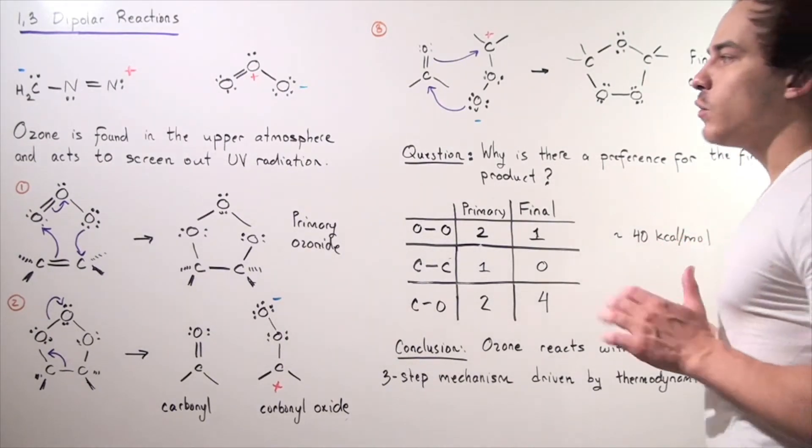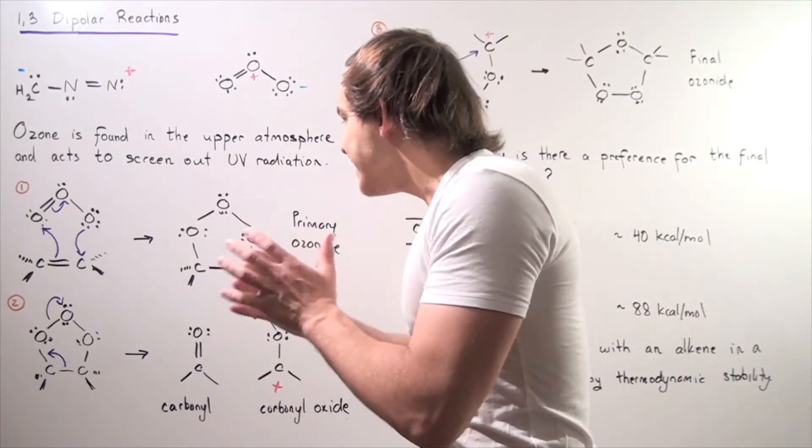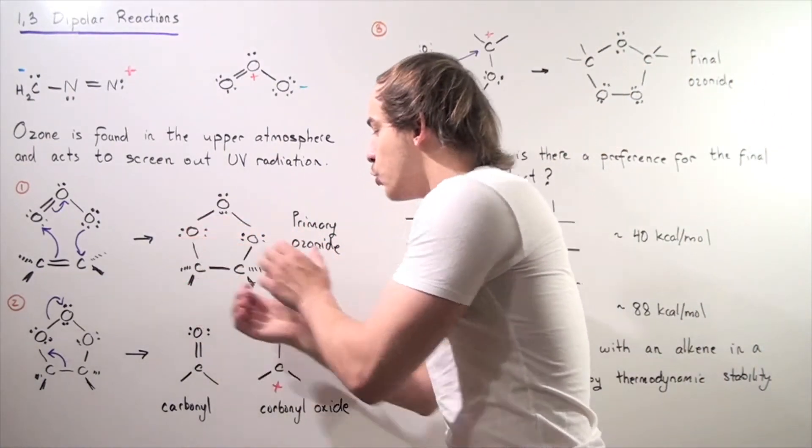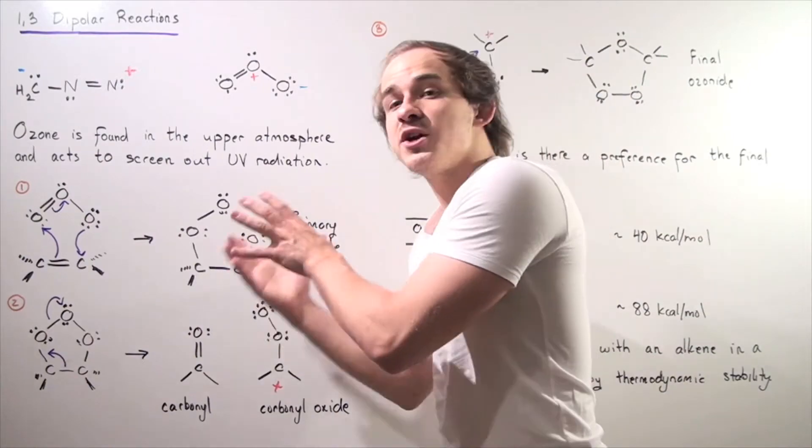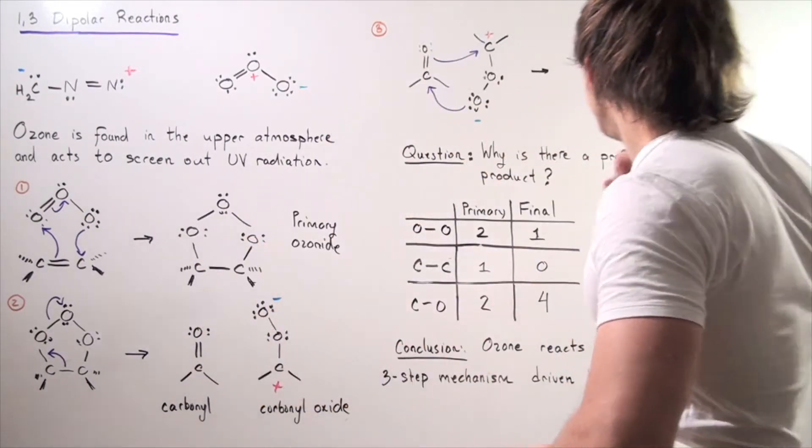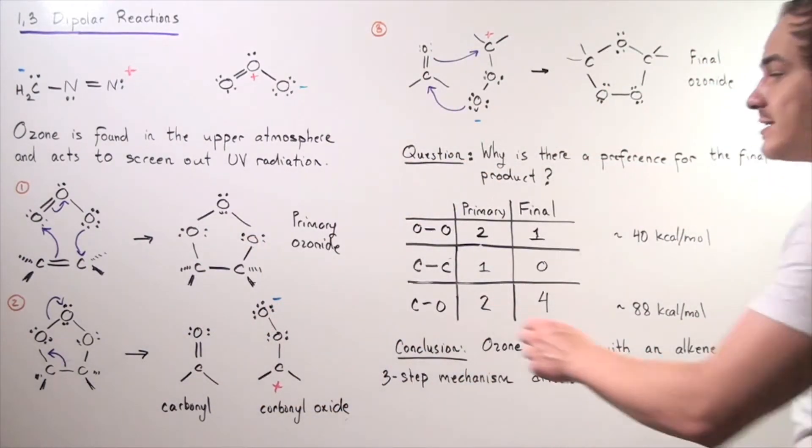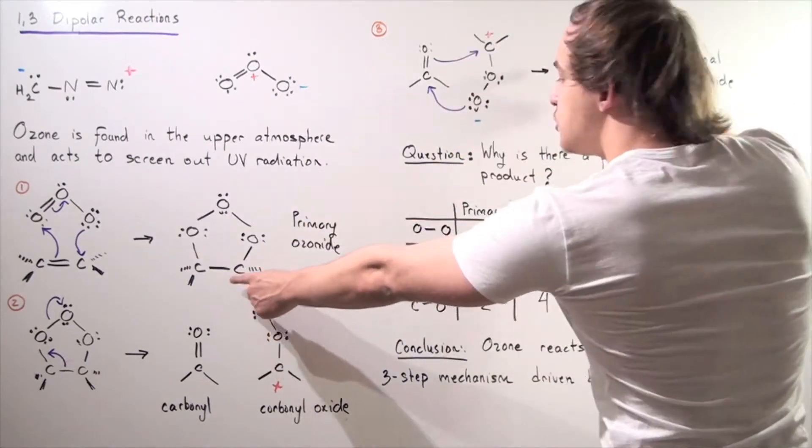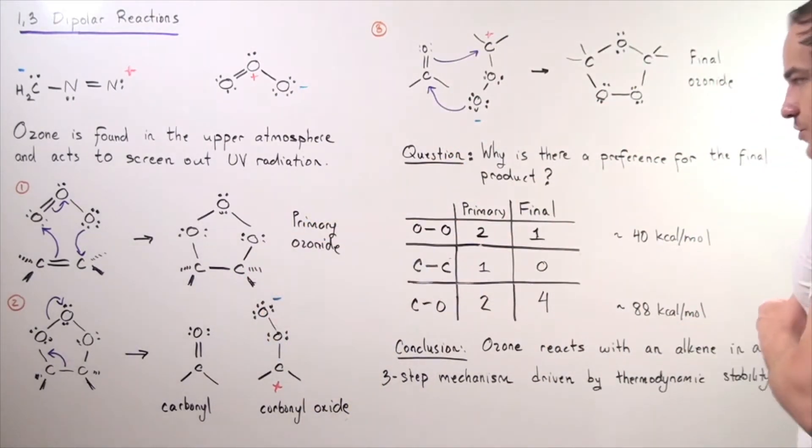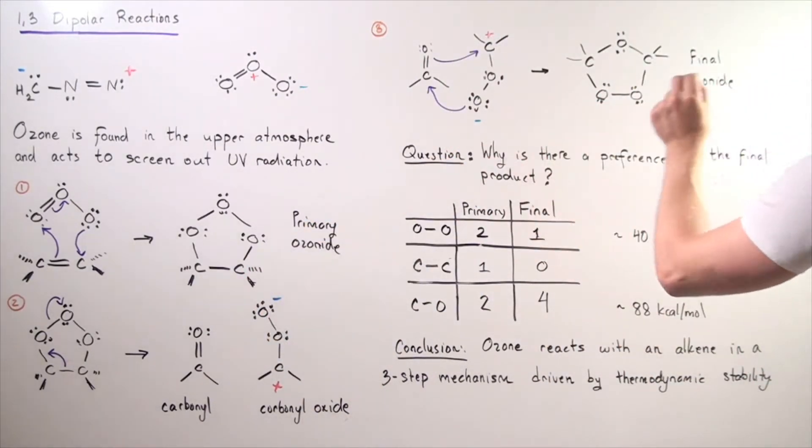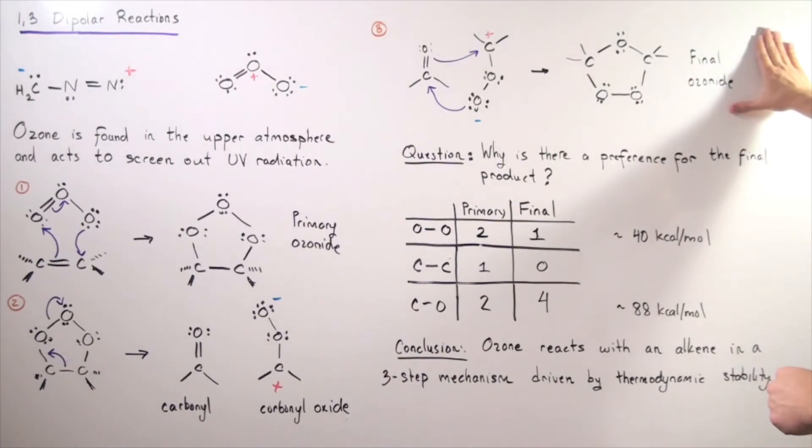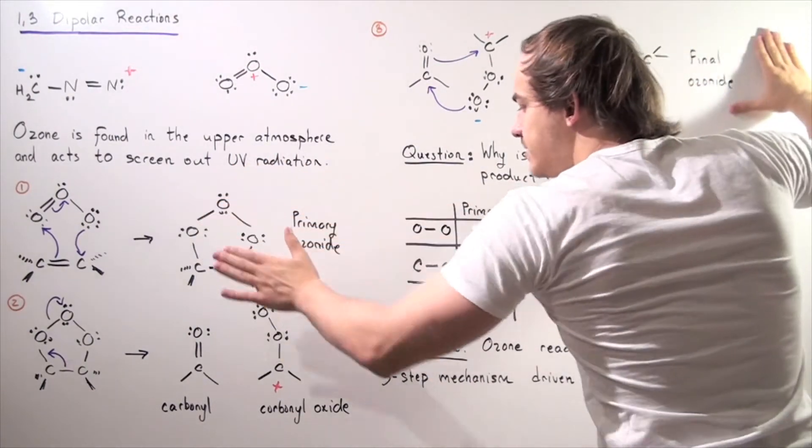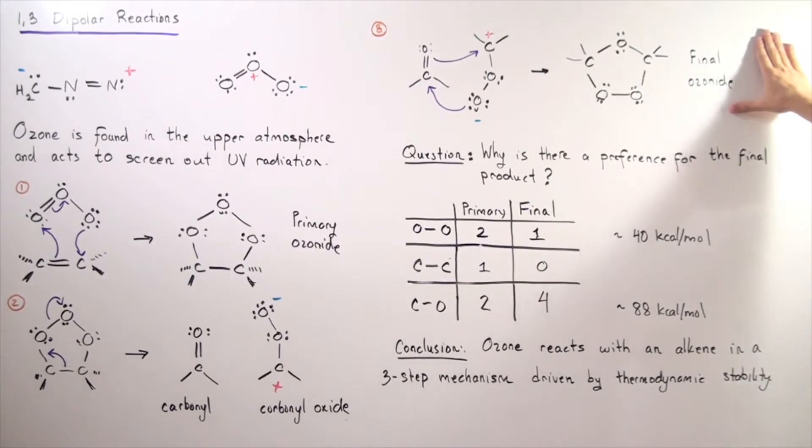Now, let's ask the following important question. Why is it that this molecule, this ozonide, rearranges to the final ozonide? Why is there a clear distinction between these two molecules? So why is there a preference for the final product in this three-step mechanism reaction known as ozonolysis?